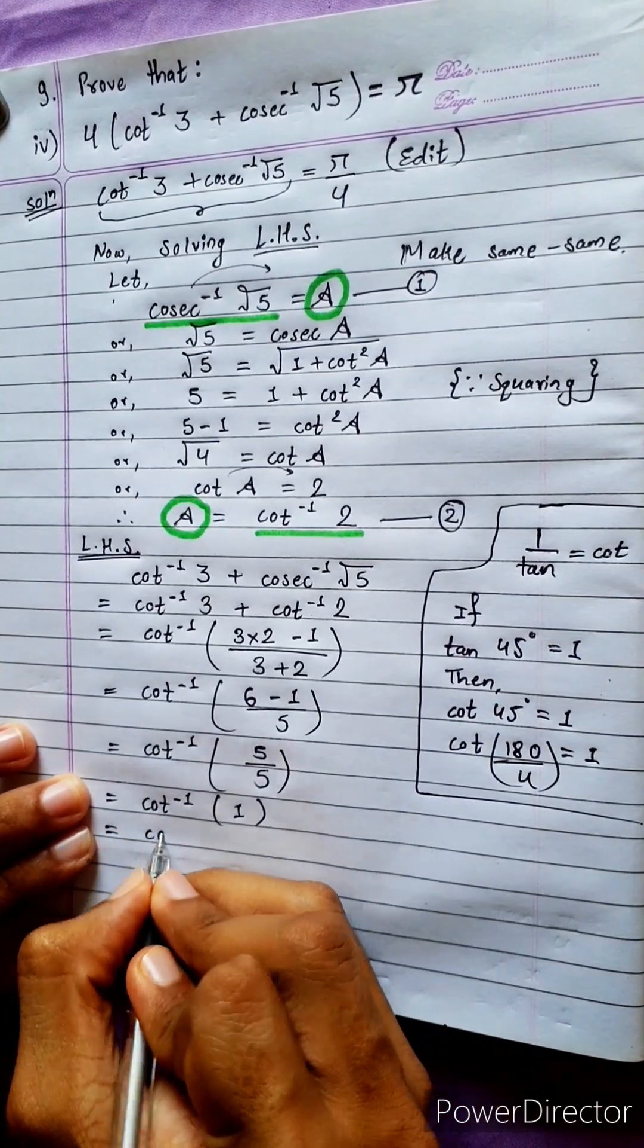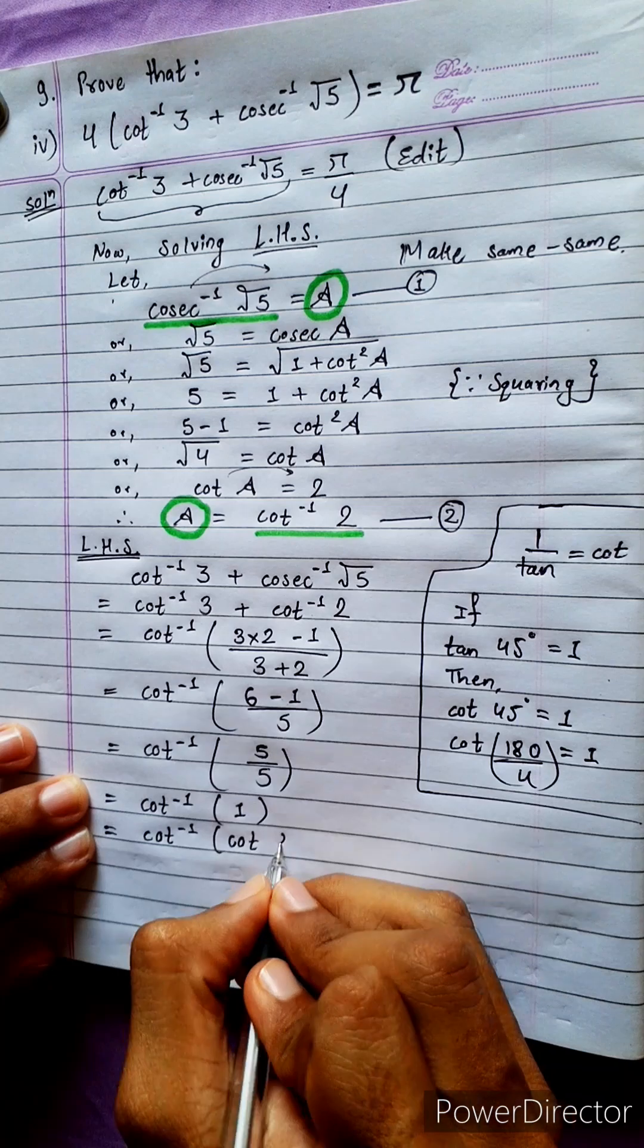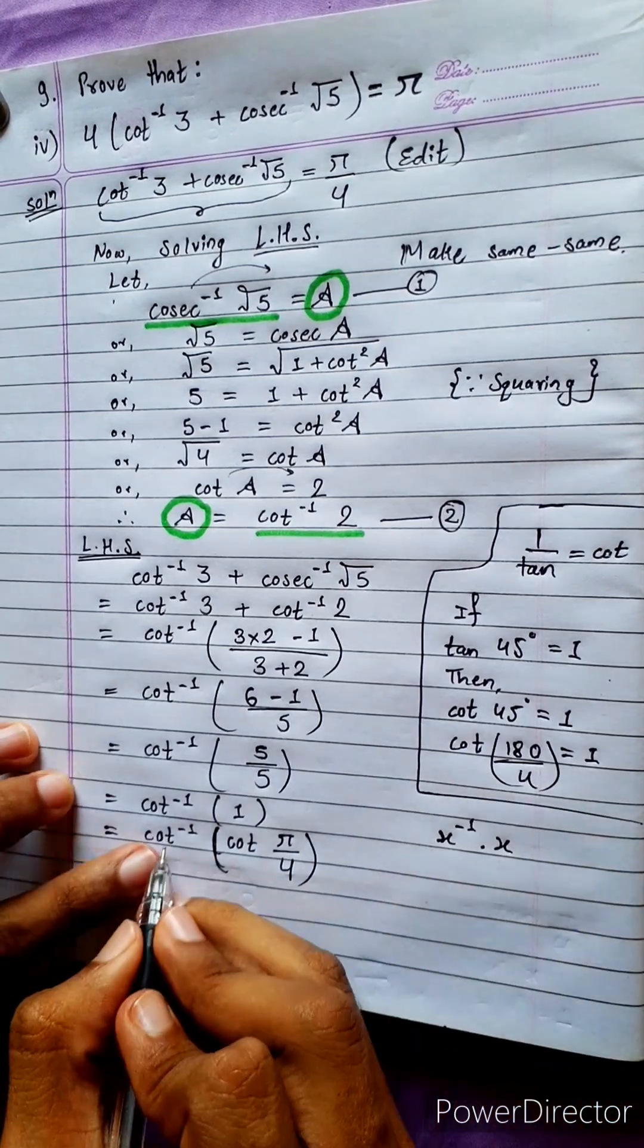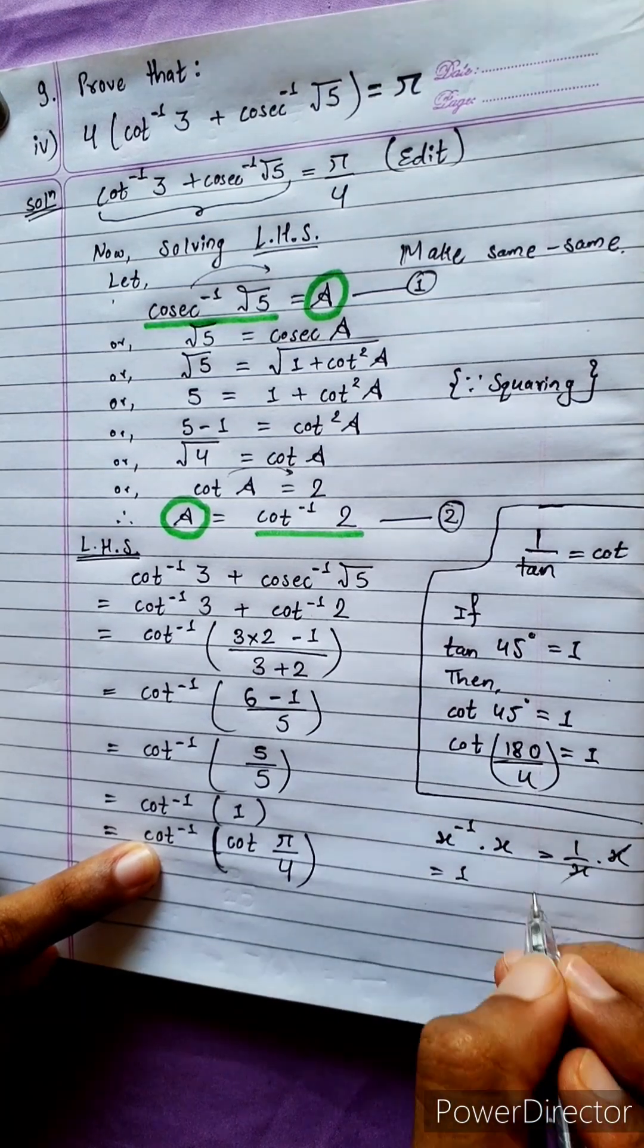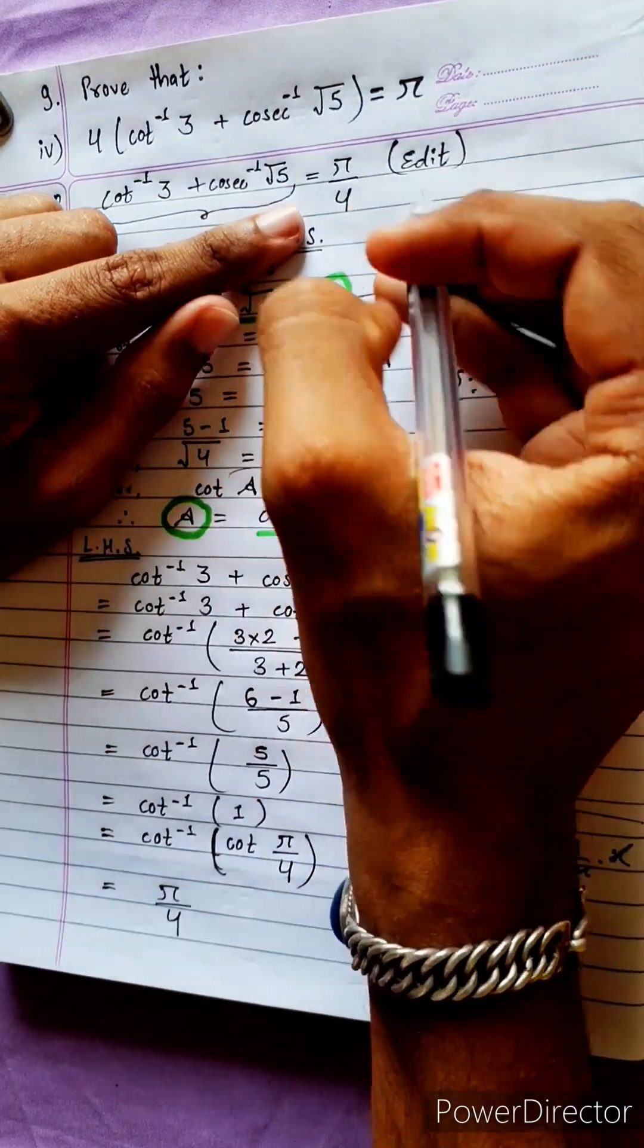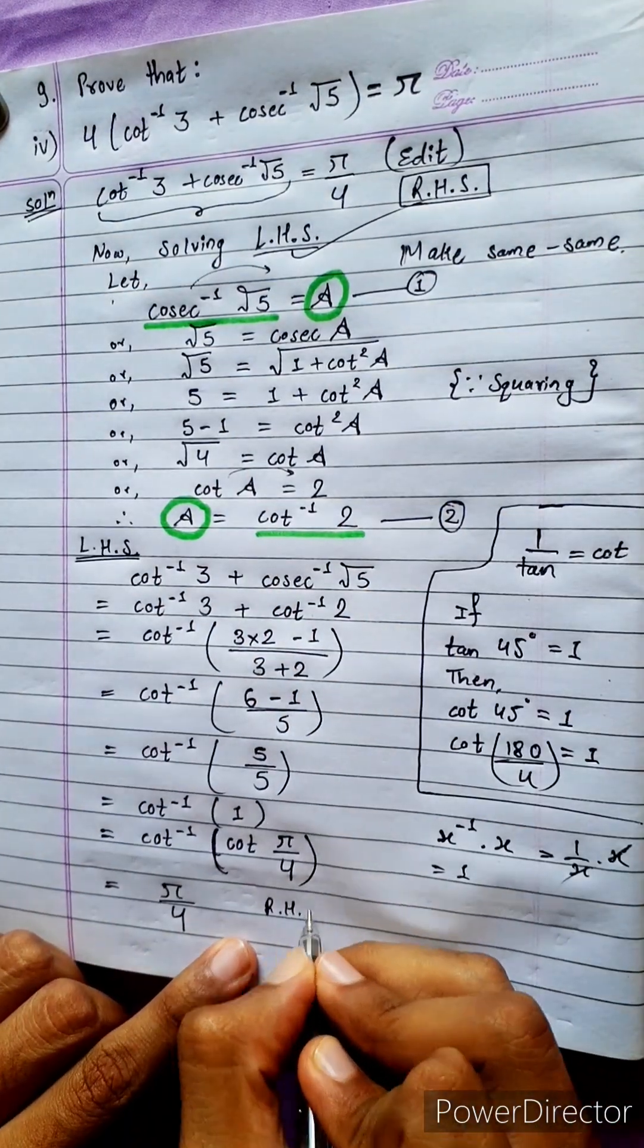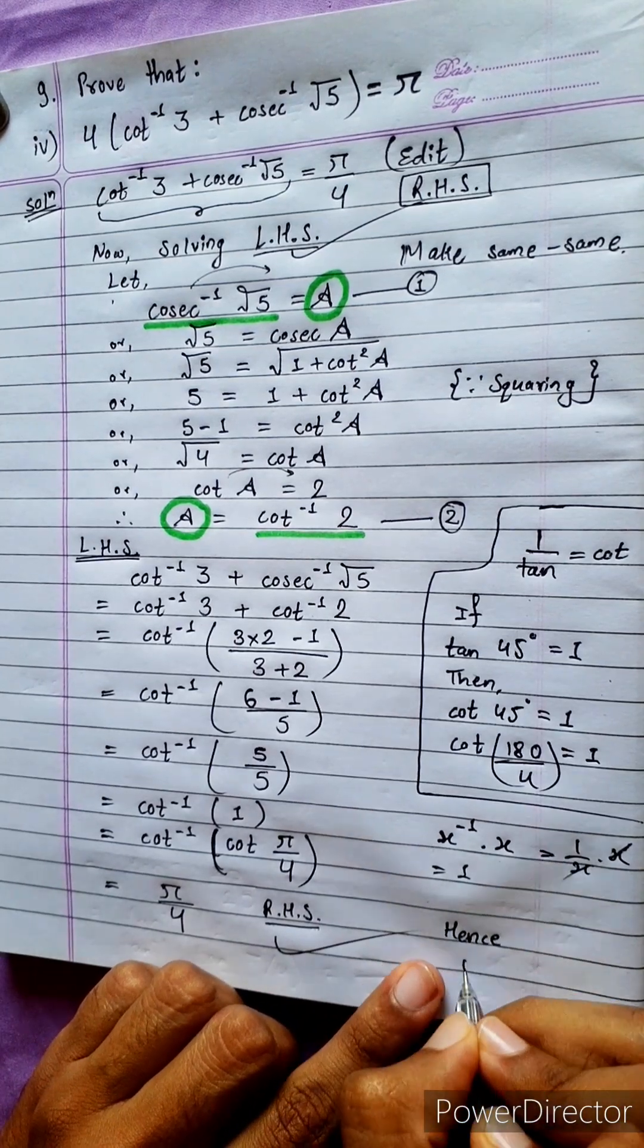So from this information we can write like as cot inverse cot pi by 4. X inverse into x equals to 1. So 1 into pi by 4, pi by 4. This is our RHS right hand side. Solving left hand side we got right hand side. Hence proved.